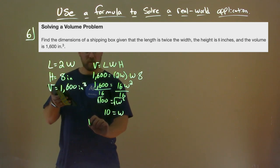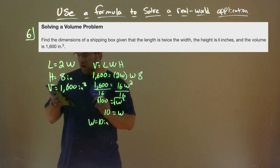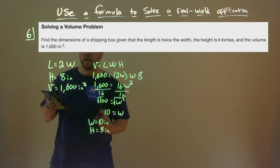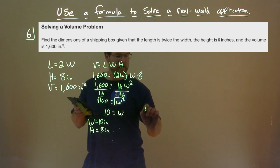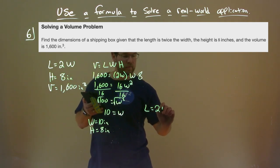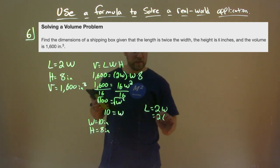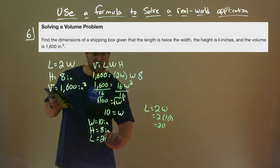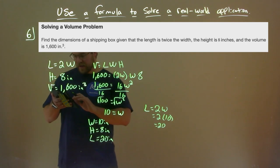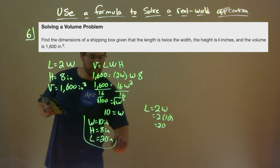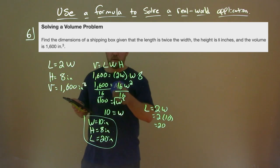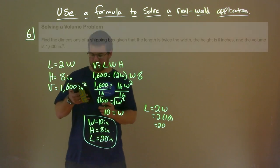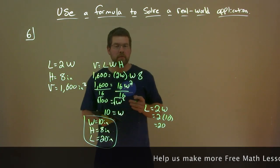So W equals 10 inches. Our height we already know is 8 inches. Our length is 2 times W, and 2 times 10 is 20, so our length is 20 inches. We've now found all the dimensions of the box: W equals 10, height equals 8, and L equals 20 inches.